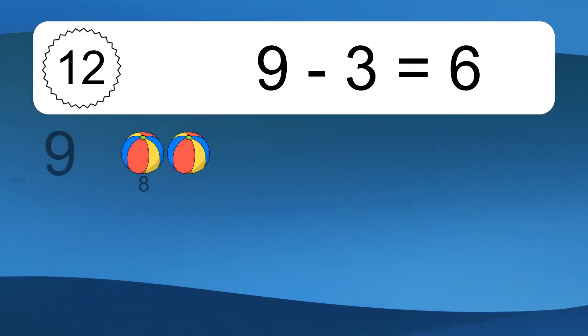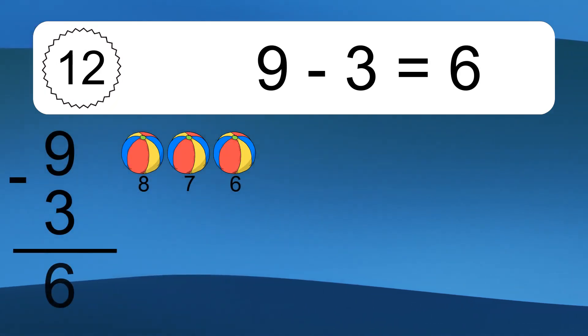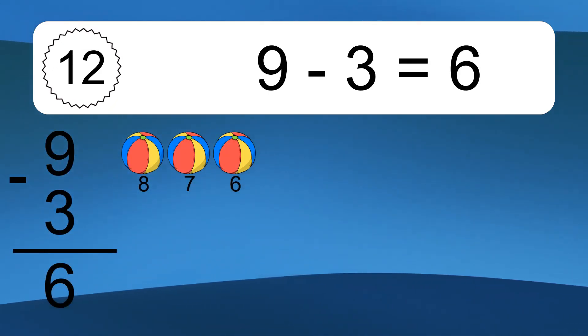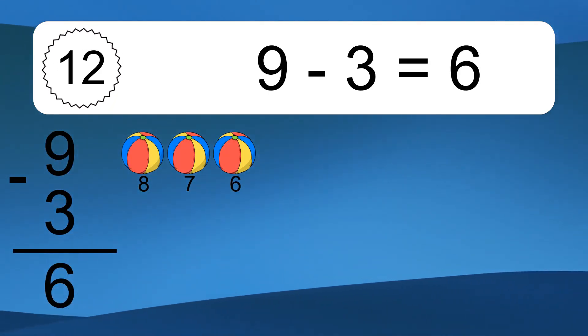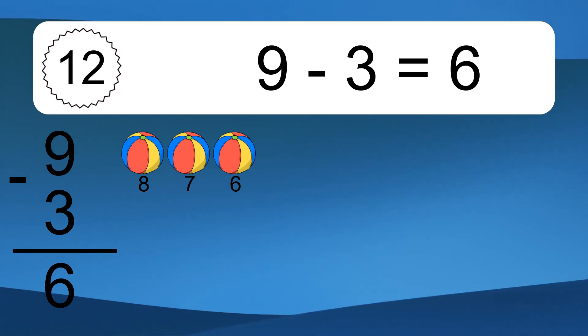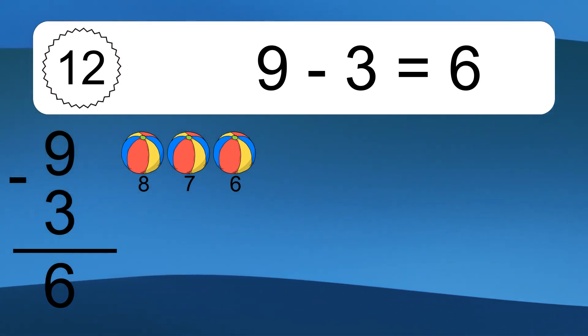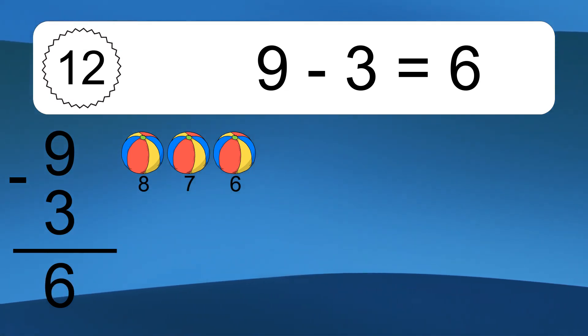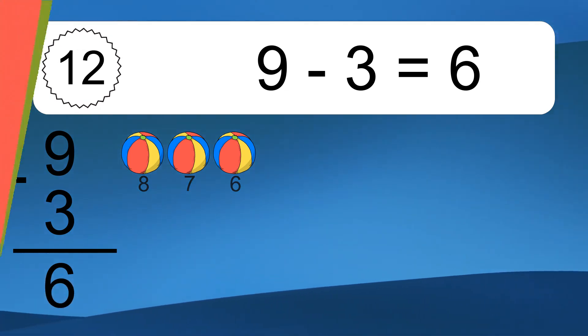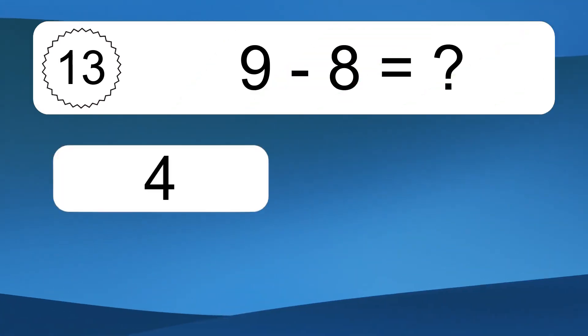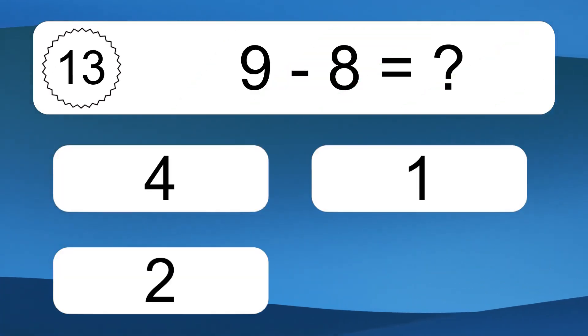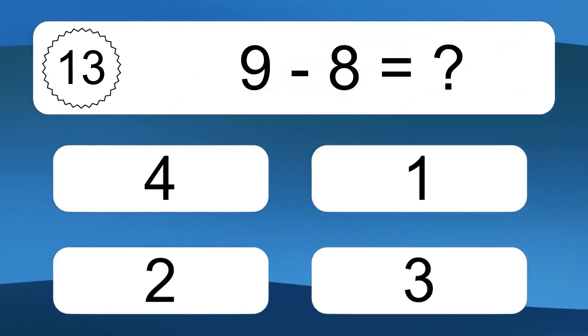9 minus 3 equals what? 9 minus 3 equals 6. Let's count it. 8, 7, 6.